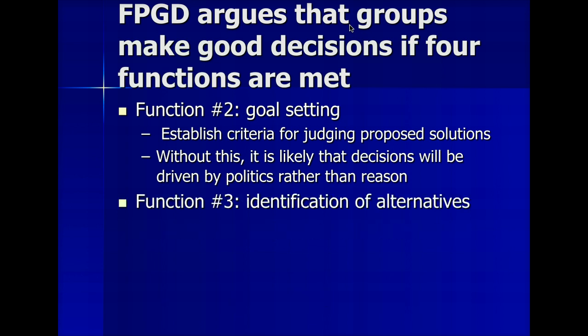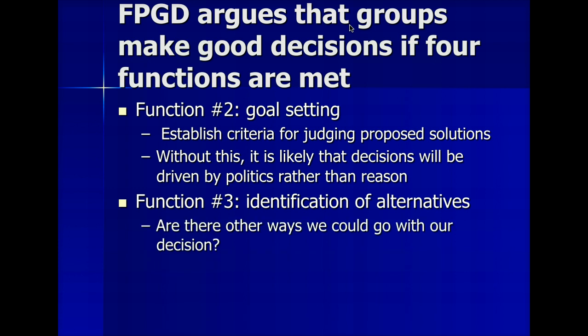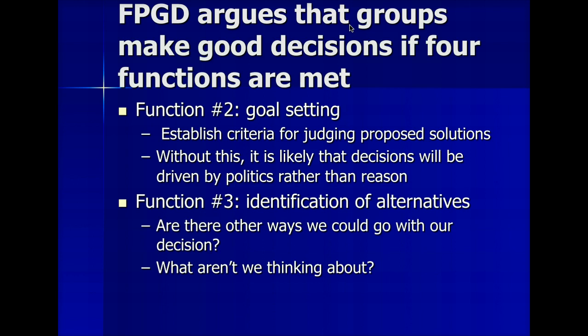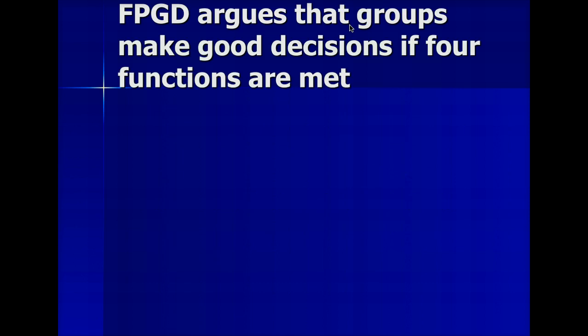The next function is identification of alternatives — what are ways that we could go with our decision? This is where you start looking at what your possible solutions are. We're not evaluating at this point; we're just saying here's a list of the possible solutions we might go with. What aren't we thinking about? You might think of this like a brainstorming session — just shout out ideas, suggestions, whatever kind of solutions might exist. That's where we're going to open up.